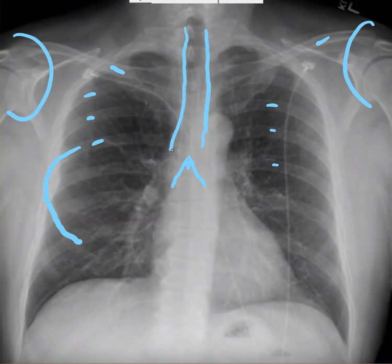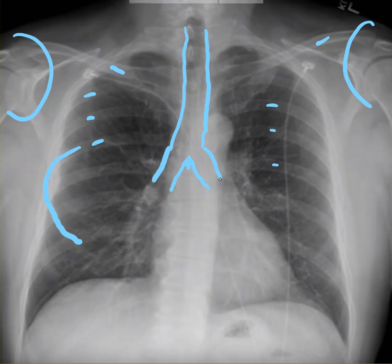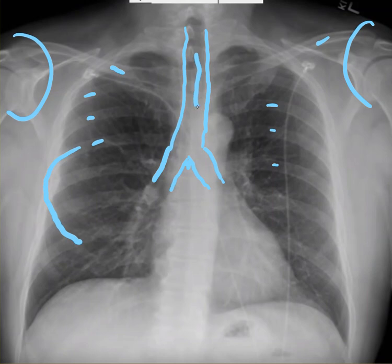You have the right main bronchus coming off right here, and of course the left — which is a bit harder to see — comes off on this side. If you're looking for ET tube placement, you want the ET tube to be approximately five centimeters above the carina, somewhere up in here.